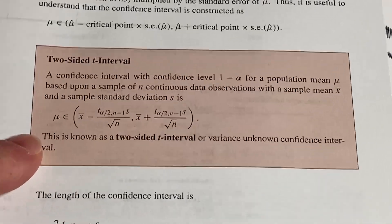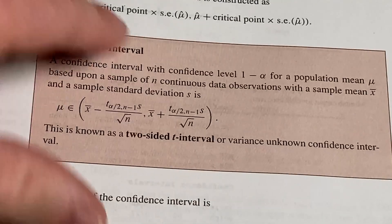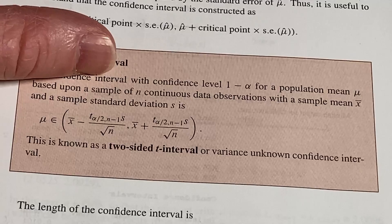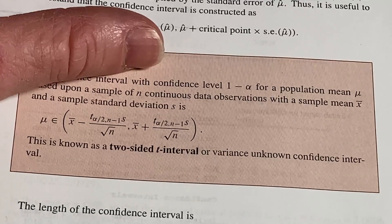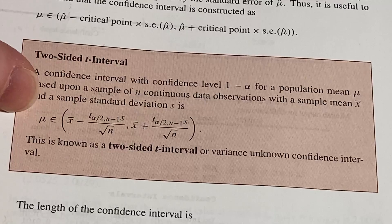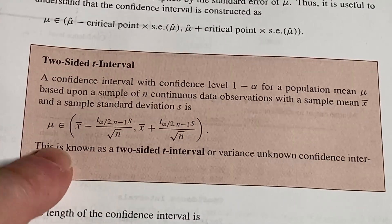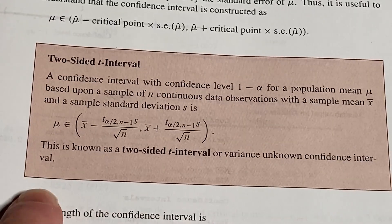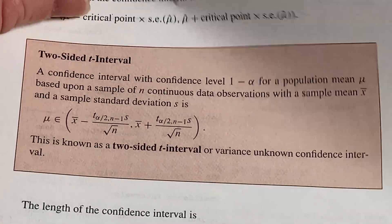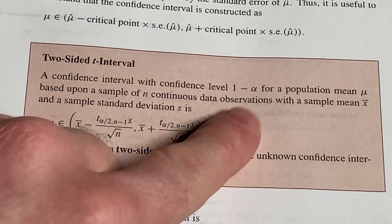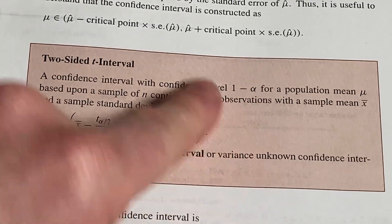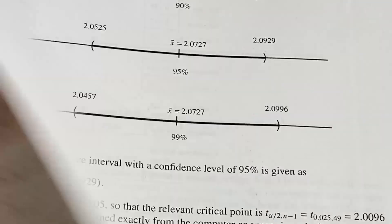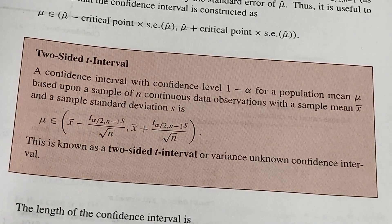A confidence interval with confidence level 1 minus alpha for a population mean mu based upon a sample of n continuous data observations with a sample mean x-bar and a sample standard deviation s. So mu is in this interval. This is known as a two-sided t interval or variance unknown confidence. If alpha is 5 percent, it would be a 95 percent confidence interval.